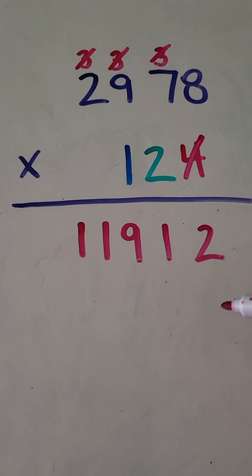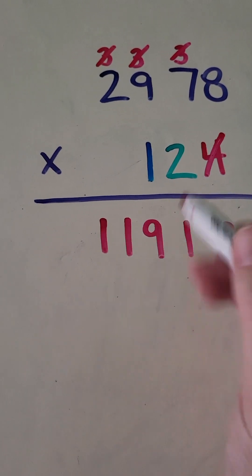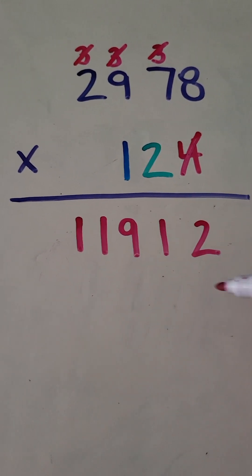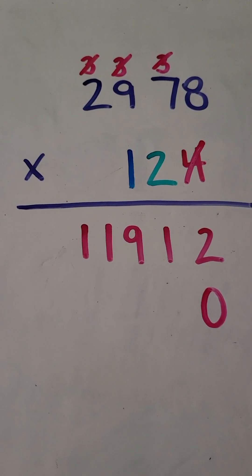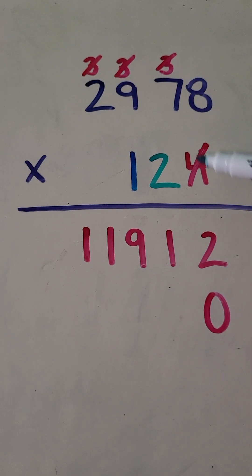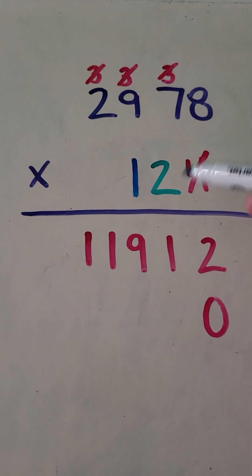And then when I come down here to indicate that now I'm moving on to the number in the tens place, I'm going to put a zero here as a placeholder, and I'm going to move on to the other color. So here we go, multiplying the next numbers by the two in the tens place. Same thing.